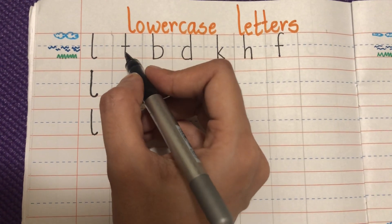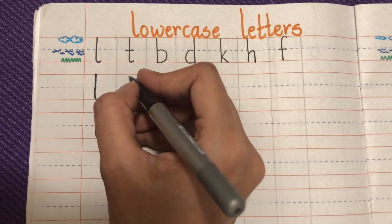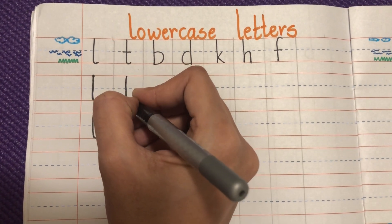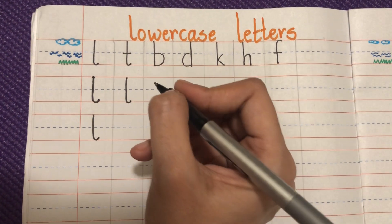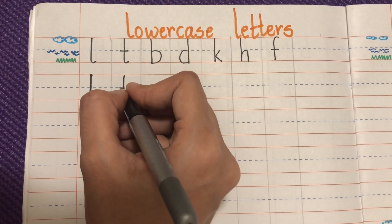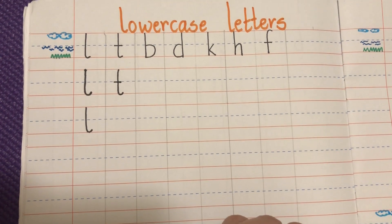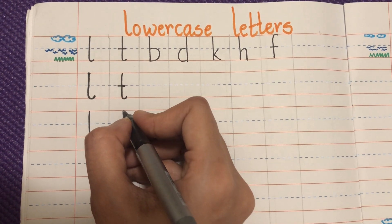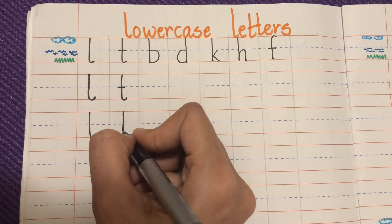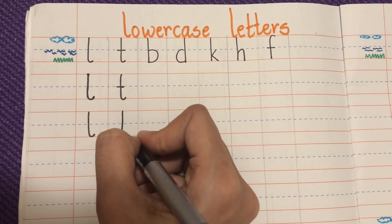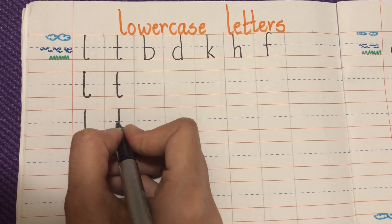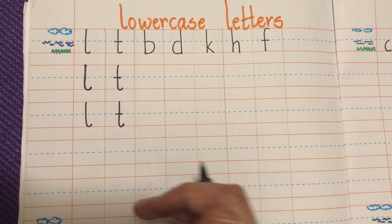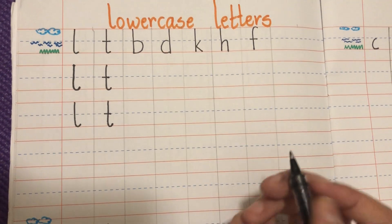The next tall letter is 't'. You're going to start from the red line, go down to the grass line, take a curve, and then dash across the 't'. Let's try once more: start at the red line, go down, take a curve, and dash it. Practice 't' in the spaces below.